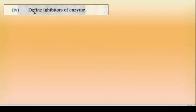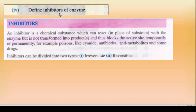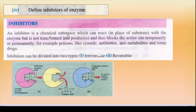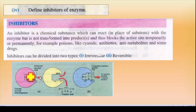Short Q4 — Define inhibitor of enzyme. Inhibitor ka matlab hai koi bhi aisa agent jo reaction ko stop karta/rokta hai. An inhibitor is a chemical substance which can react in place of substrate. Enzyme ke saath substrate react karke enzyme-substrate complex banata hai, lekin inhibitor ki presence mein yeh substrate ki jagah react karta hai aur enzyme-inhibitor complex ban jaata hai, jisse product nahi ban sakta. Inhibitor ke examples hain: poison, cyanide, antibiotics, antimetabolites.